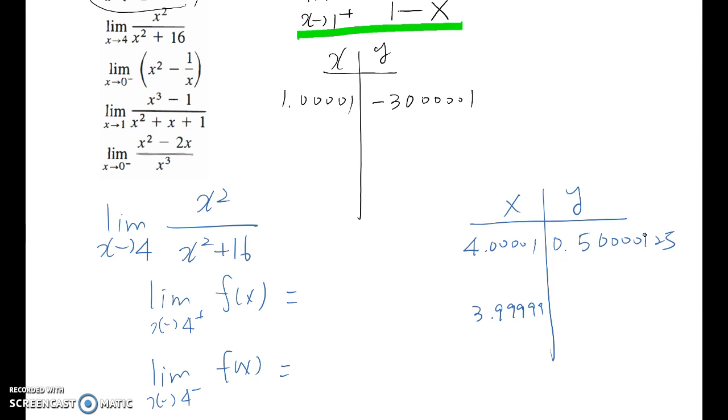Now let's plug 3.99999. So 3.99999 square divided by 3.99999 square plus 16, then you will get 0.49999987 something. Based on this, we confirm that those two values are approach to 0.5.